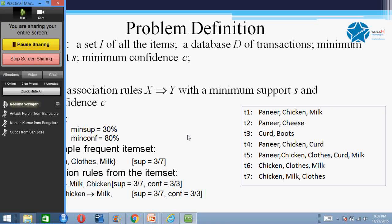If you look at it from the confidence perspective, the rule 'clothes implies milk and chicken' has a confidence of 3 out of 3, because all three records which have clothes also contain milk and chicken.